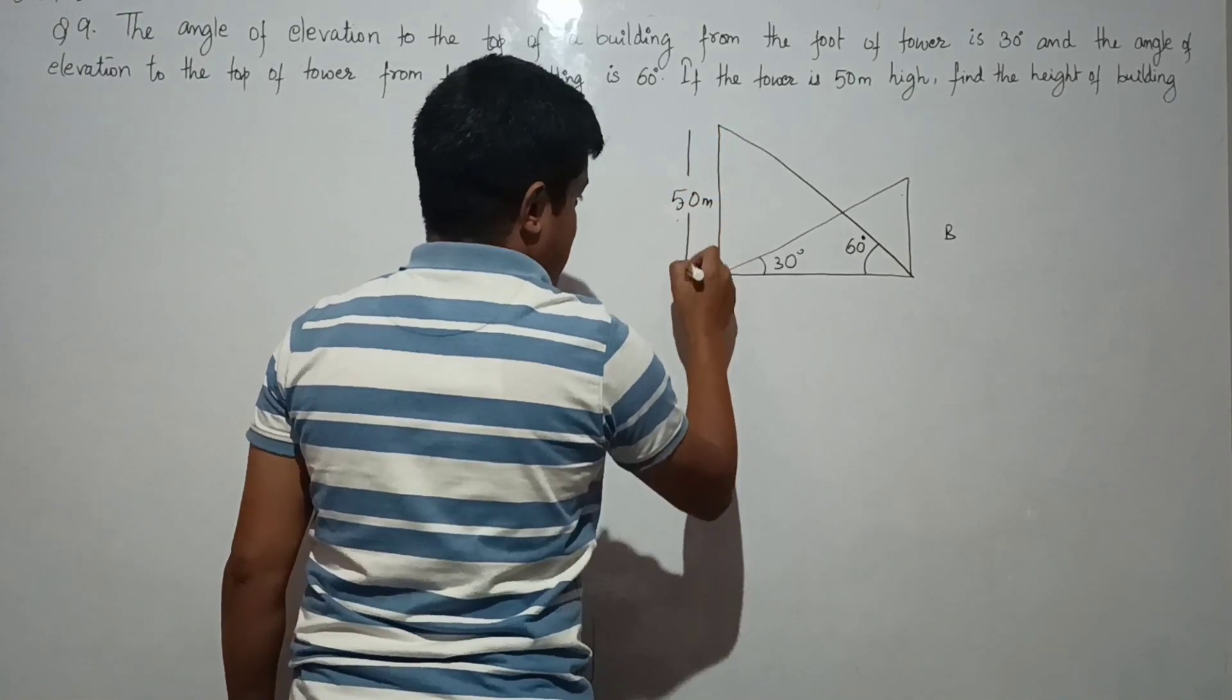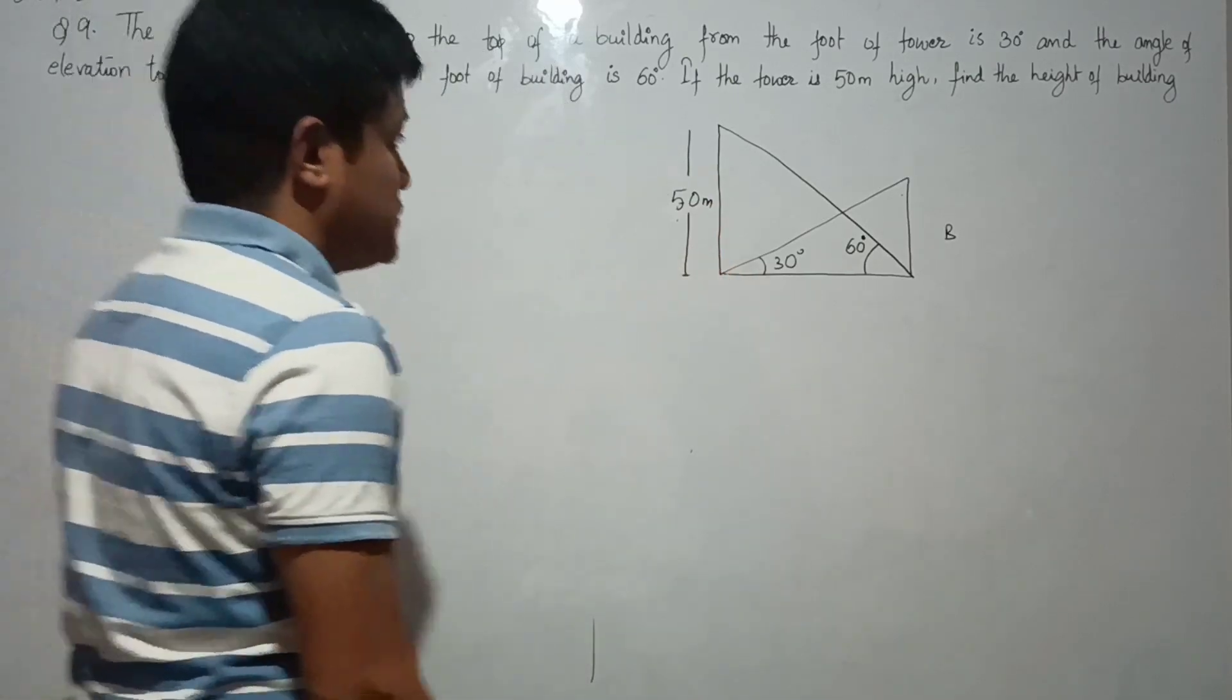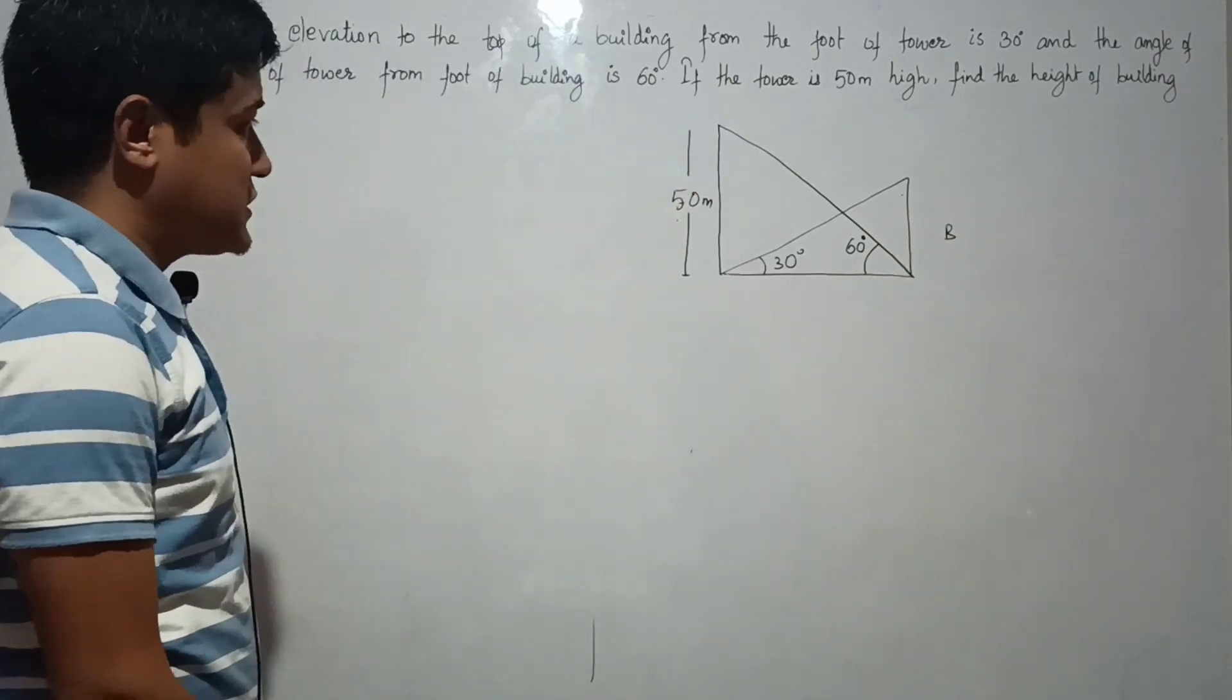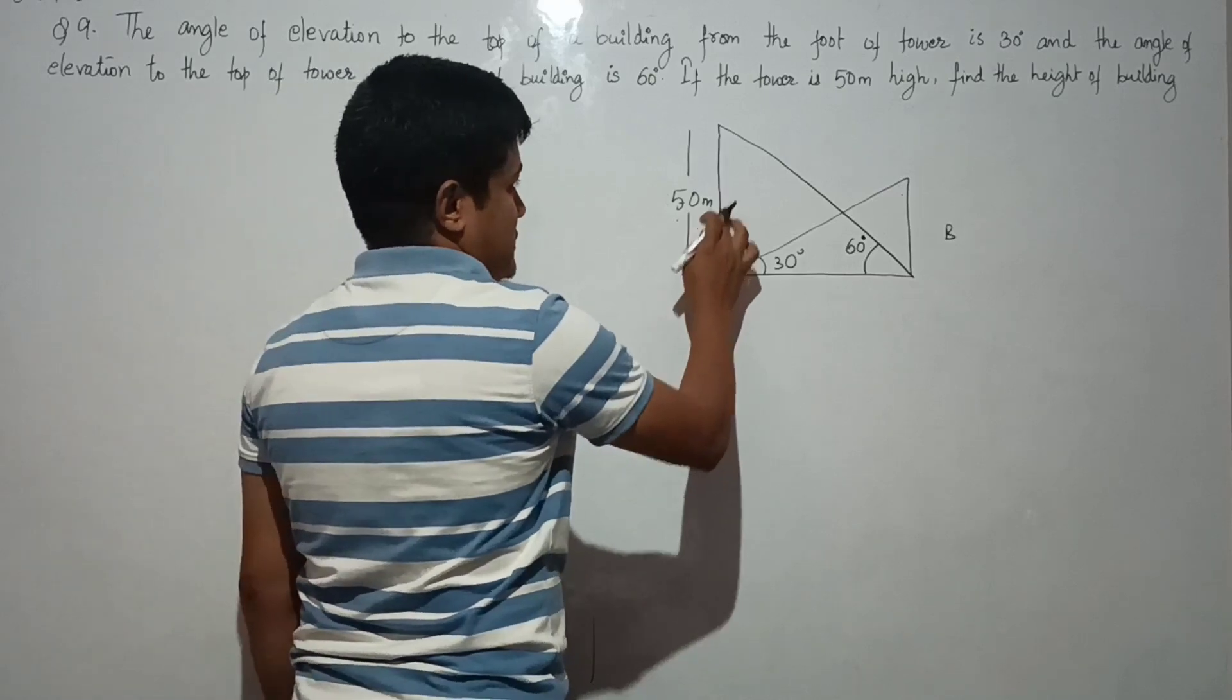us make it 50 meters high. Find the height of the building. So we need to find the building height. The thing is that the triangles have a common base on one side and angles are given.